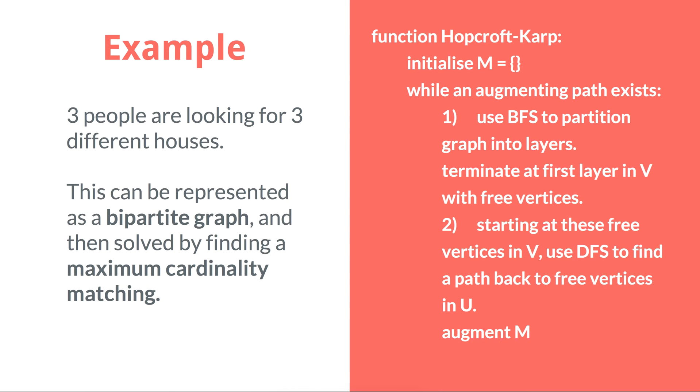An example of a problem that this algorithm is used for is that of three people looking for three different houses. Each person likes two of the three houses and doesn't want to live in the third. This can be represented as a bipartite graph, and by applying this algorithm, each person can be matched to a house.